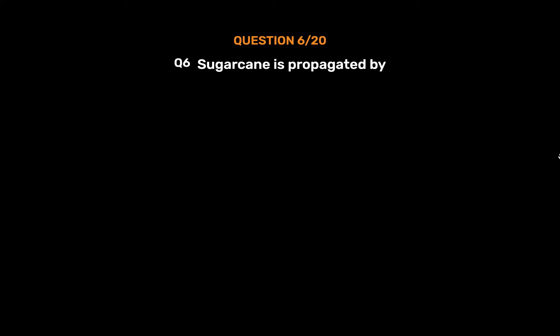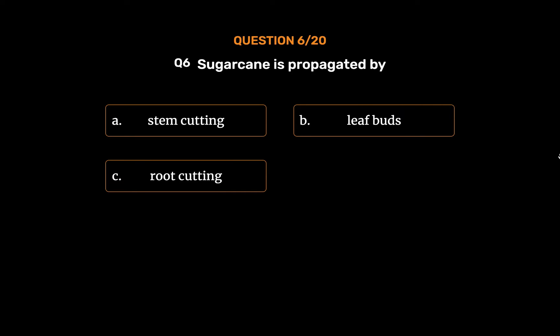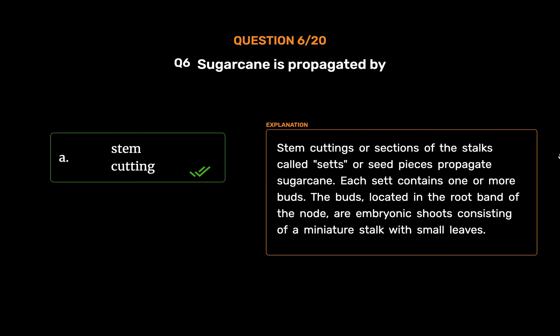Question No. 6: Sugarcane is propagated by. Option A: Stem cutting. Option B: Leaf buds. Option C: Root cutting. Option D: Seeds. The correct answer is Option A: Stem cutting. Stem cuttings or sections of the stalks called sets or seed pieces propagate sugarcane. Each set contains one or more buds. The buds, located in the root band of the node, are embryonic shoots consisting of a miniature stalk with small leaves.